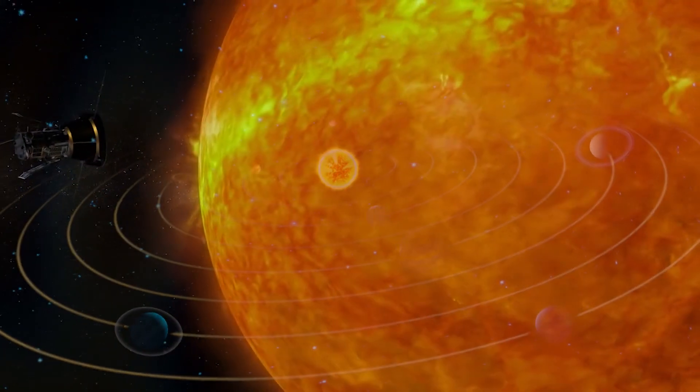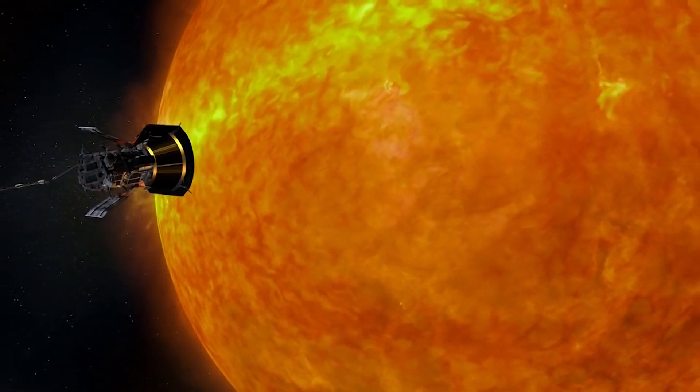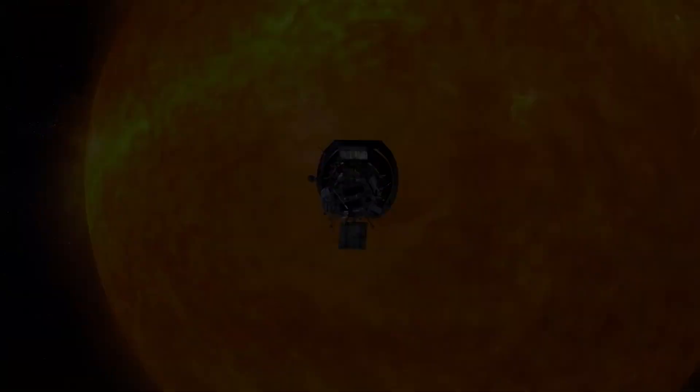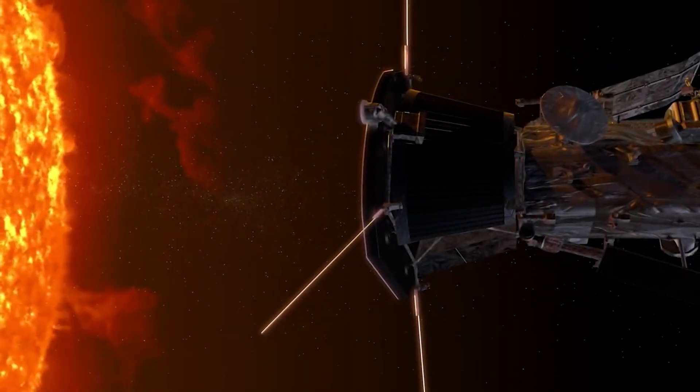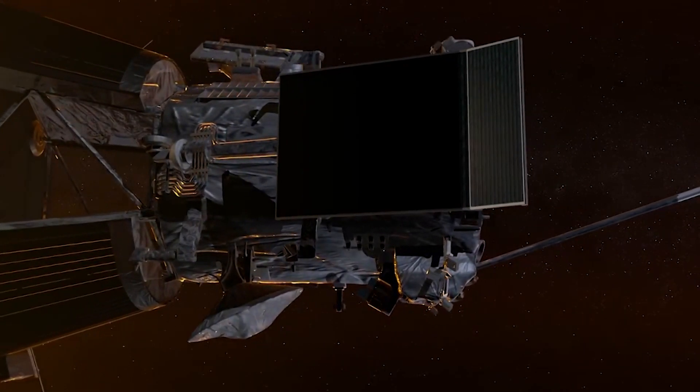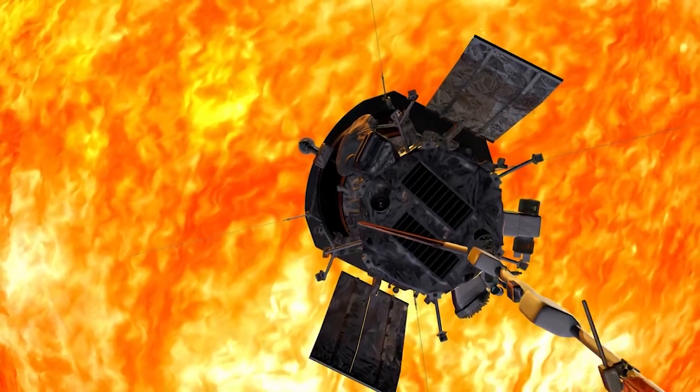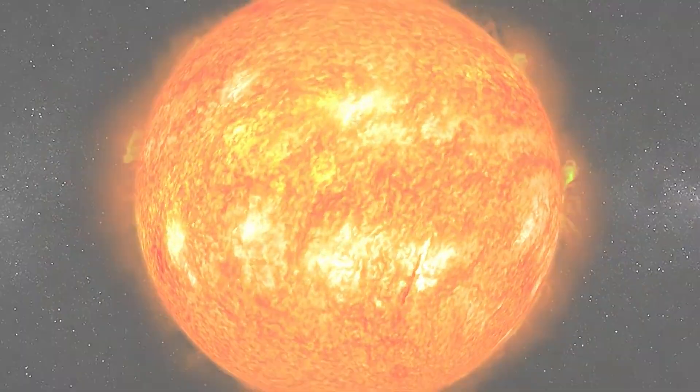On March 17, 2023, the Parker Solar Probe will make its 15th close approach to the Sun, traveling around 8.5 million kilometers from the surface of the Sun. The spacecraft will make a swoop by Venus later this year to get into a more solar-aligned position as the mission's completion year of 2025 approaches.